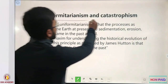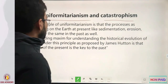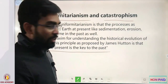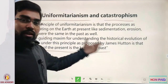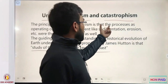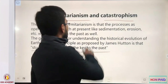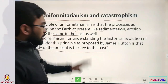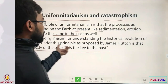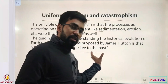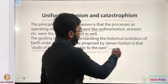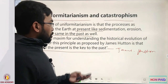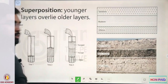The first principle is uniformitarianism. The main point is: the study of the present is the key to the past. The processes operating on earth at present — like sedimentation and erosion — were the same in the past as well. This is the explanation of uniformitarianism, given by James Hutton.